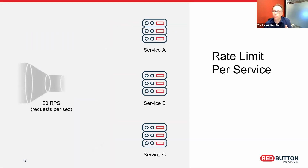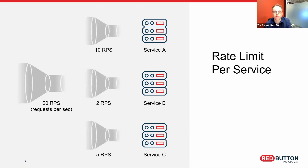On top of that, you should not just have one global rate limit for the entire organization or for each domain. You should have a rate limit for each service. For example, if you have three services A, B, and C, you should set a rate limit specific for each one. Service A can be fine-tuned to 10 requests per second, which is more accurate than a global 20 requests per second. Service C can be rate limited to 5 requests per second, and service B can be rate limited to 2 requests per second.